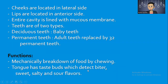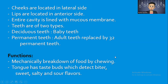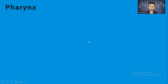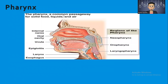The tongue has taste buds which detect bitter, sweet, salty, and sour flavors. There are a lot of taste buds and different areas detect different tastes — the front area has different taste receptors, the sides have different ones, and the back has different ones as well. The pharynx is a common passageway for solid food, liquid, and air.